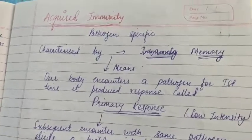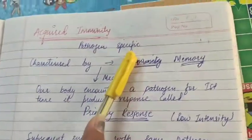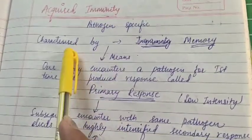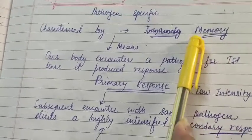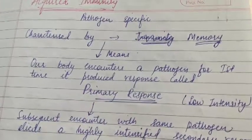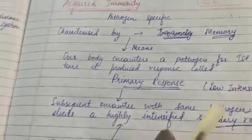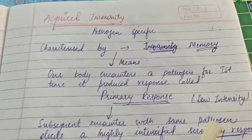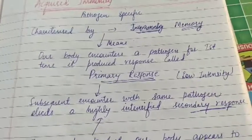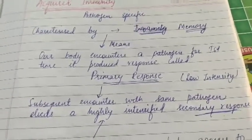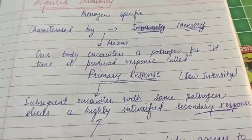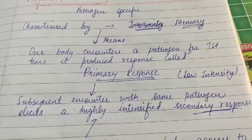Next is acquired immunity. Acquired immunity is pathogen-specific, whereas innate immunity was non-specific. A very important characteristic of acquired immunity is memory. Whenever a pathogen enters our body for the first time, our immune system produces what we call a primary response. When the same pathogen enters our body a second time, our immune system has memory of it and produces a fast response called the secondary response.